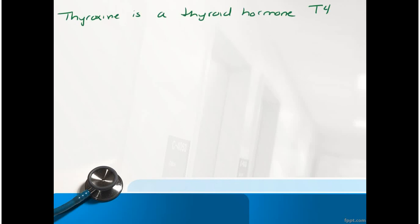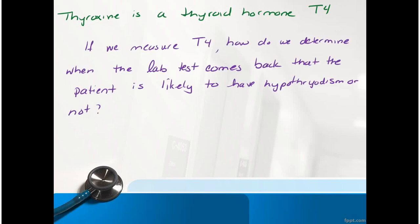The test involves collecting information about T4, which is thyroxine, a thyroid hormone, and that is a proxy for hypothyroidism. So the question is, if we measure T4, how do we determine when the lab test comes back that there's too much or too little T4? Ergo, that the patient is likely to have hypothyroidism.